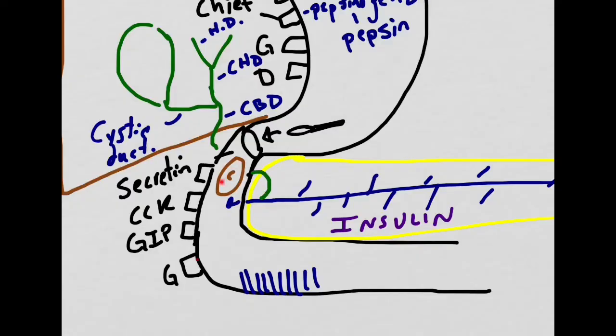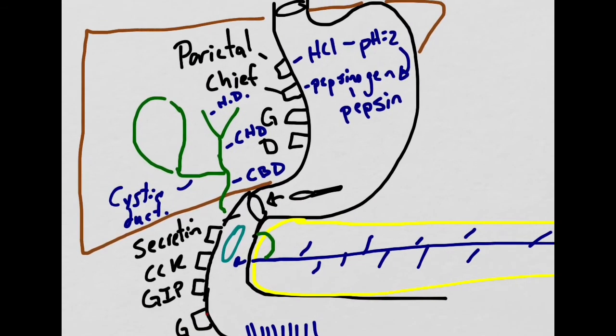When a lot of undigested food enters the duodenum, this will stimulate the release of gastrin from the G cells. This gastrin will travel up to the stomach and stimulate the parietal cells, the chief cells, and also the motility of the stomach. This in turn will help the stomach digest more of the food and decrease the amount of undigested food coming into the duodenum.